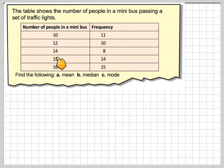For example, for 14 people in the bus that occurred, there were 8 buses that had 14 people in them.